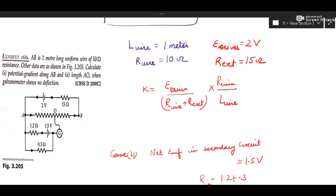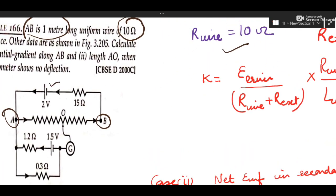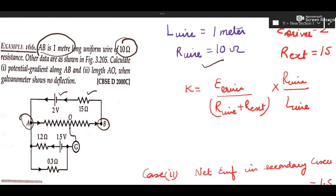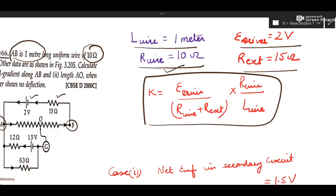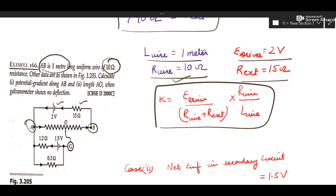In the next question, AB is the potentiometer wire with given length and resistance of 10 ohm. The first part asks to calculate the potential gradient. Look at the diagram carefully for E_driver and R_external; L_wire and R_wire are given. Substitute into the formula K = E_driver / (R_external + R_wire) × (R_wire / L_wire) and find the potential gradient. This is a substitution-based numerical.